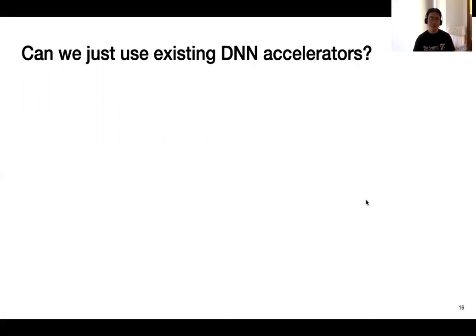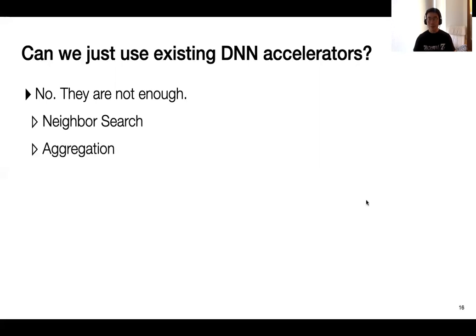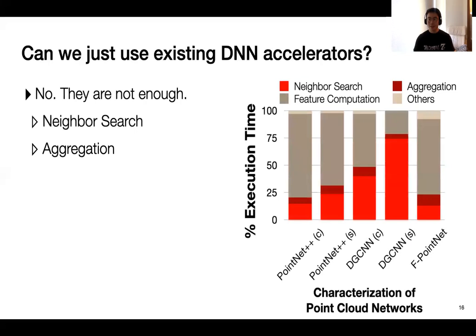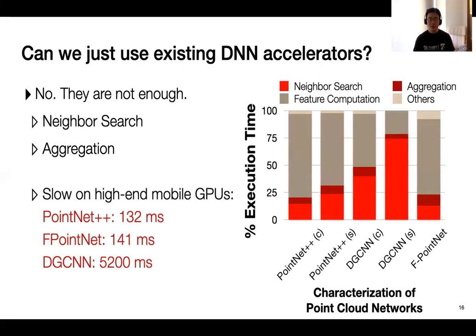Getting back to the previous question, the simple answer is no, they are not enough. And the main reason here is that we have new operators, neighbor search and aggregation. So based on our characterization results, these two operations together take a non-trivial portion of the total execution time. And what's even worse is that on today's high-end mobile GPUs, these point cloud workloads are still very slow. So what can we do to optimize?